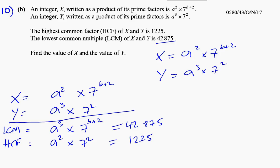From the HCF, there's only one thing we don't know, which is a. So we have a² times 7², which is 49a², and that's equal to 1,225. And a² therefore is 1,225 divided by 49.